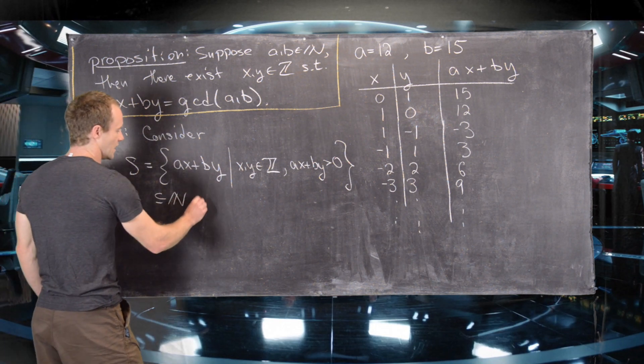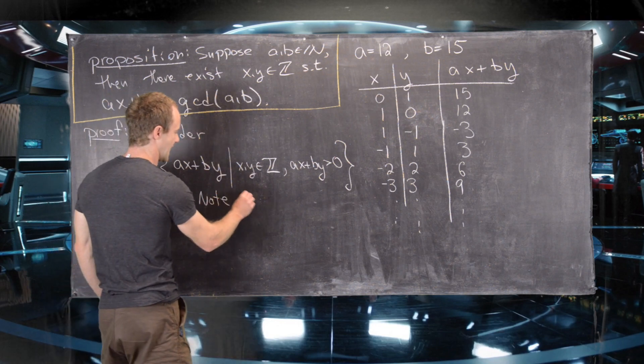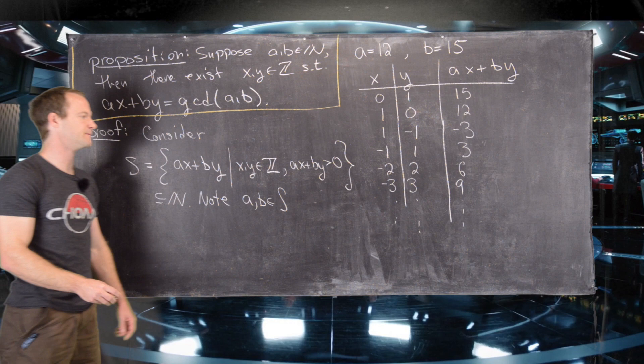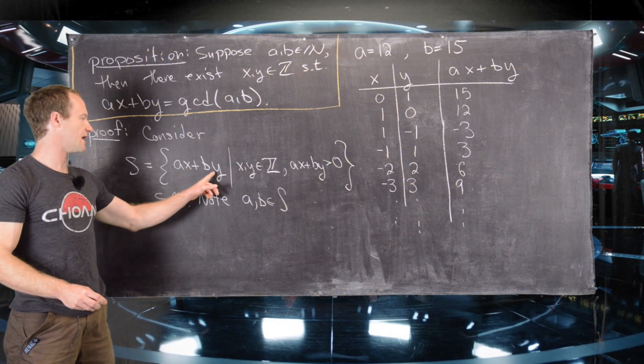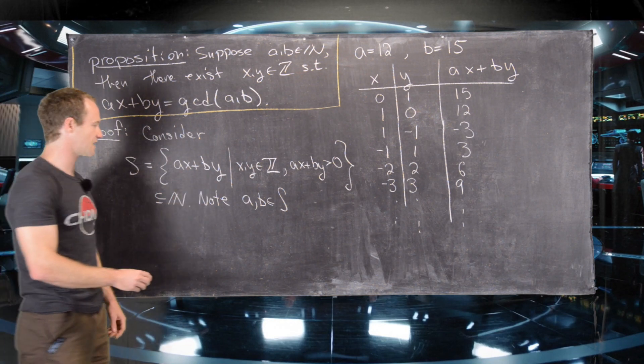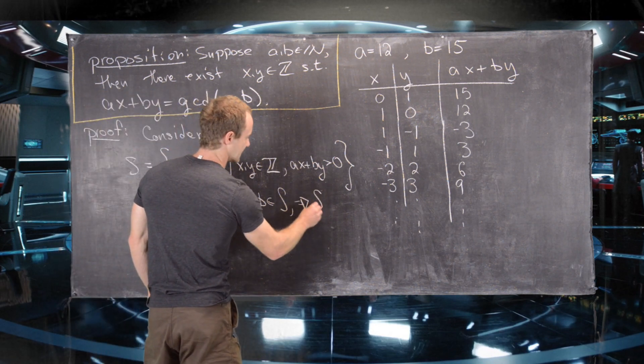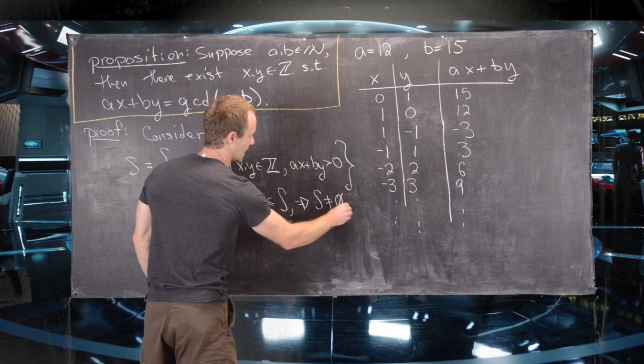And furthermore, we notice that A and B, for instance, are elements of S. Just taking X to be 1 and Y to be 0 or vice versa, which tells us that S is a non-empty set.